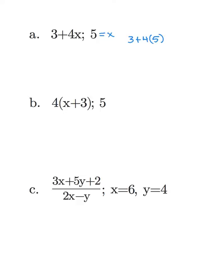From here we want to simplify using order of operations. So our first step is going to be multiply before add. We get 3 plus 20, and now if we add we get 23. And you're done. What does this mean? This means that when x is equal to 5, our expression is equal to 23.